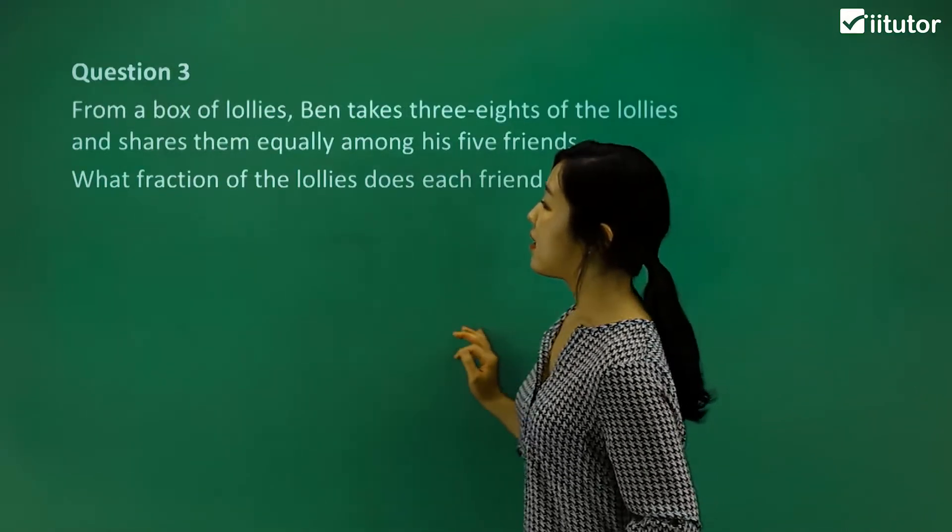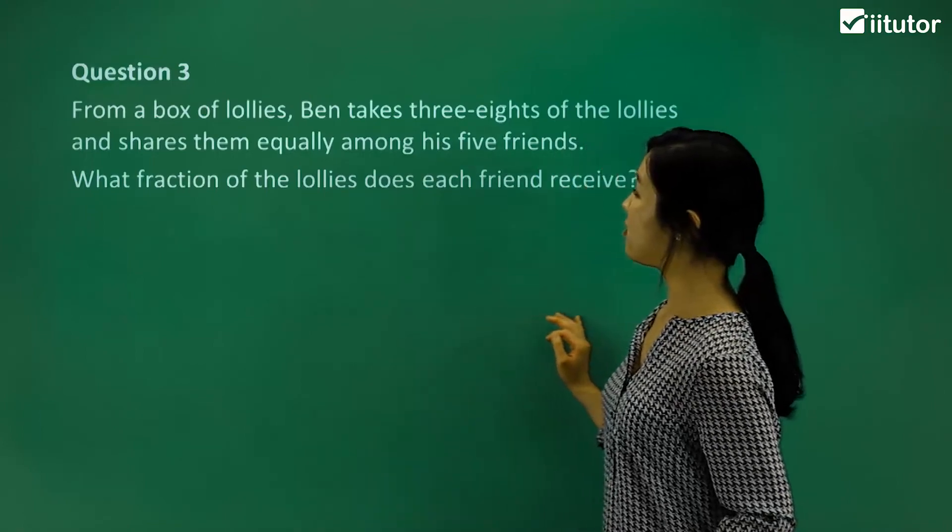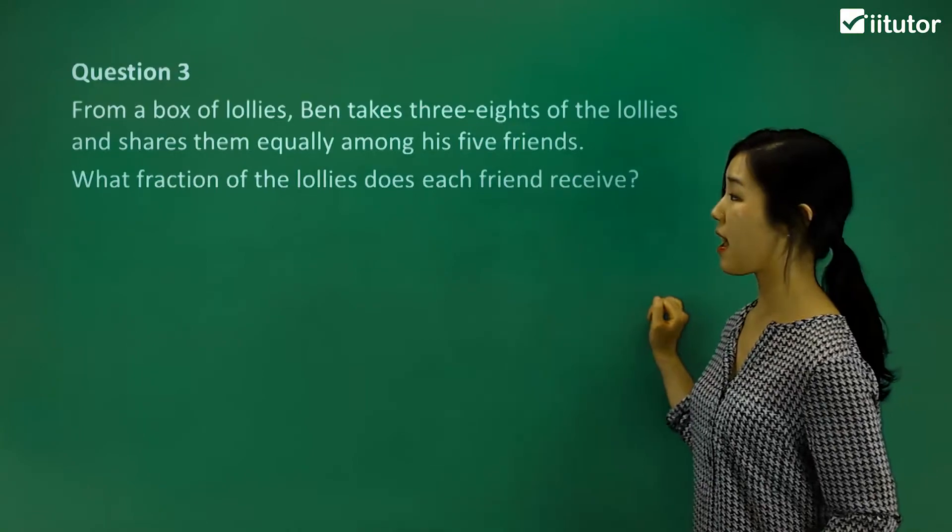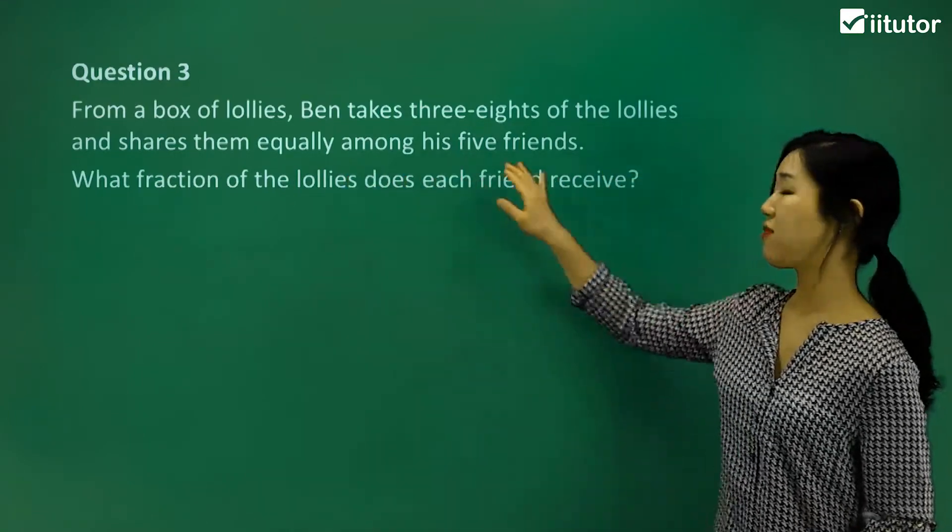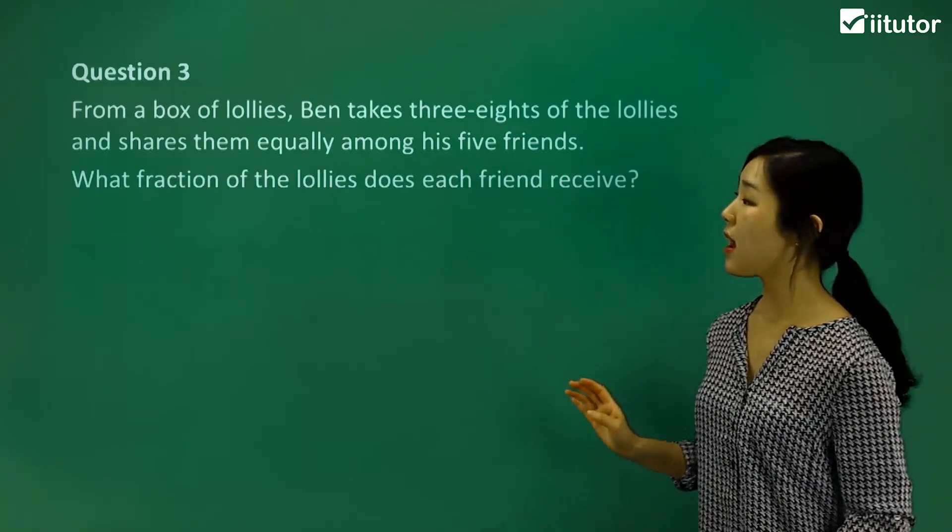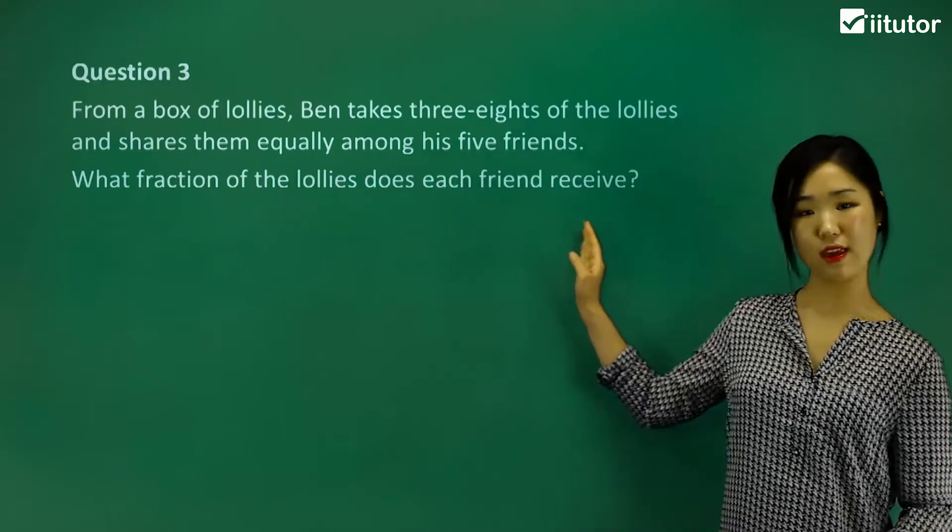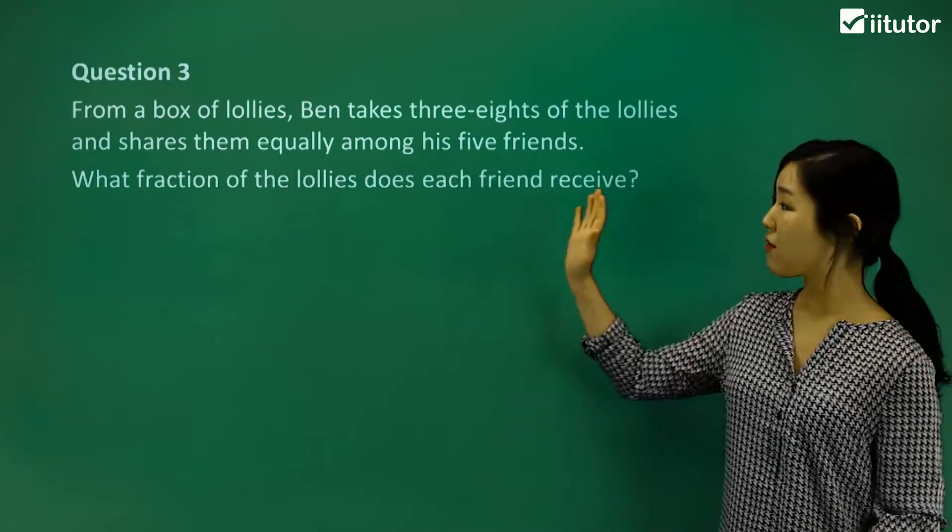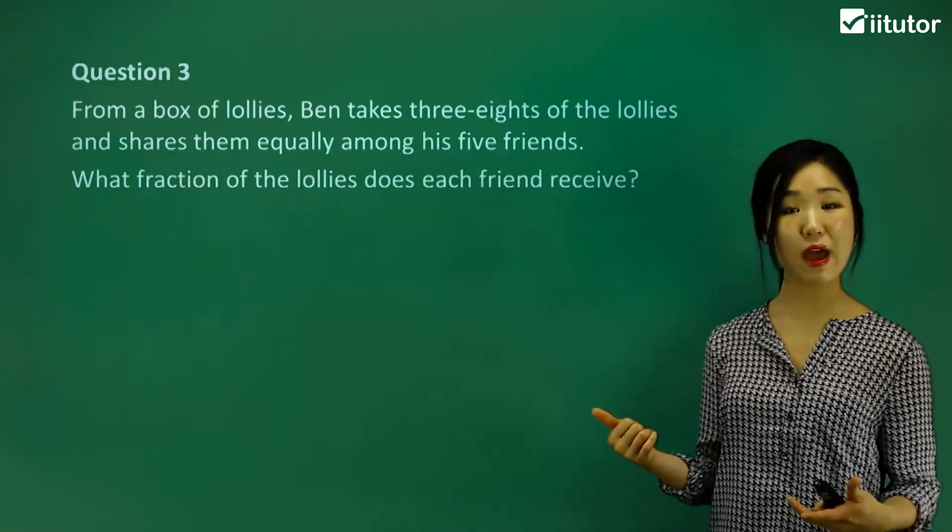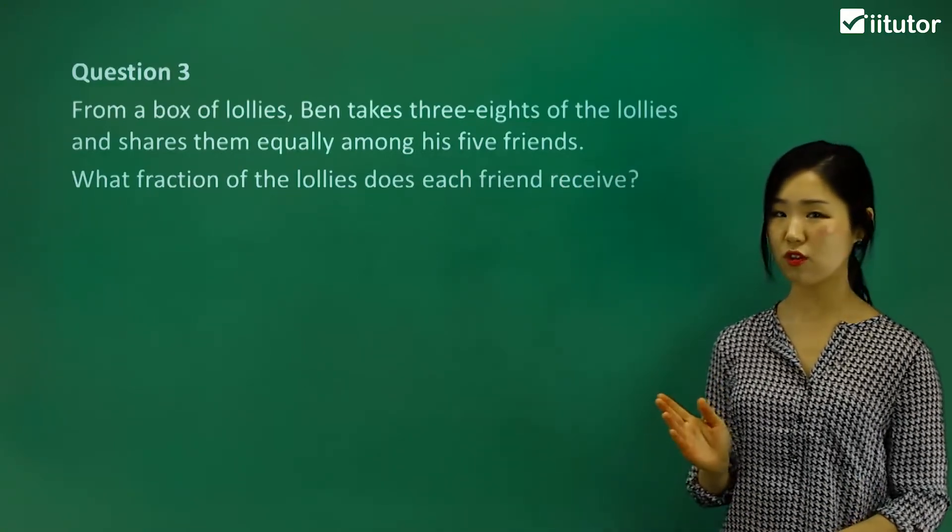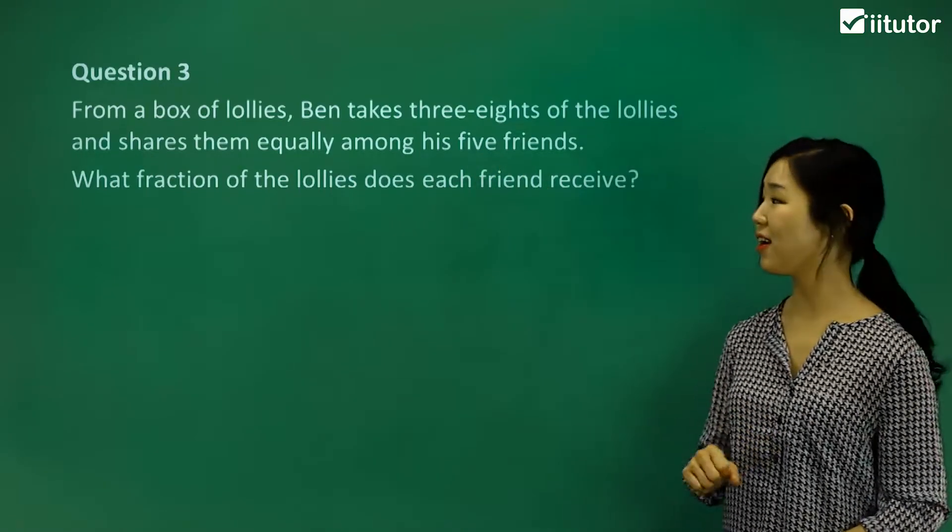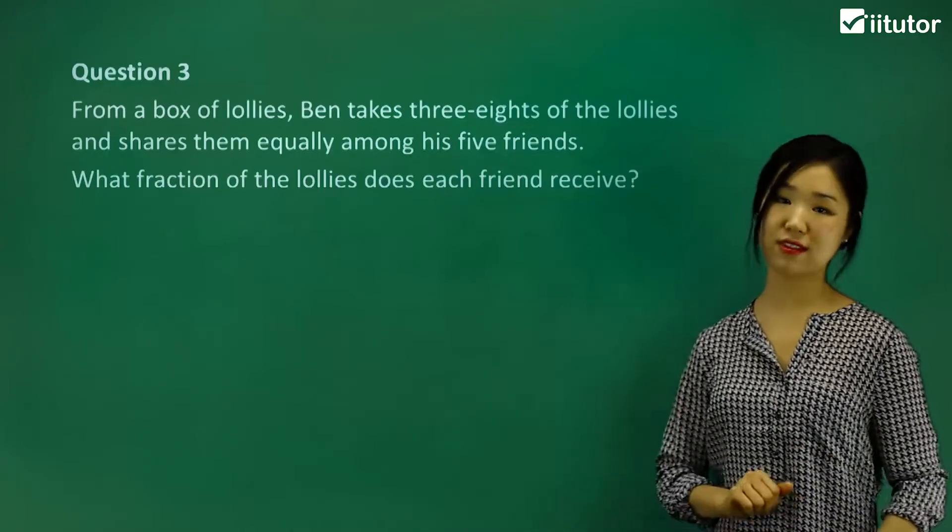Let's do question three. From a box of lollies, Ben takes three-eighths of the lollies and shares them equally among his five friends. What fraction of the lollies does each friend receive? We have five friends, and including Ben, how many people do we have? We have six people. Make sure you don't just say it's five. We have to include Ben as well because Ben needs some lollies too. There's six people that we have to divide these lollies among.